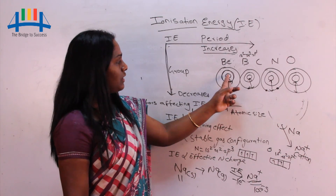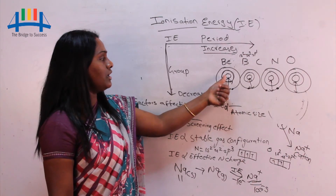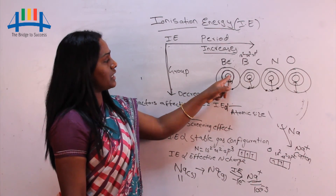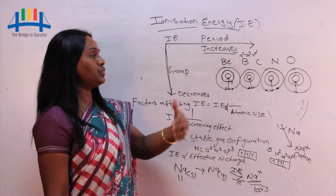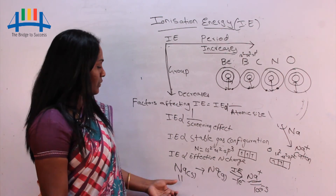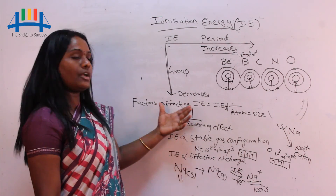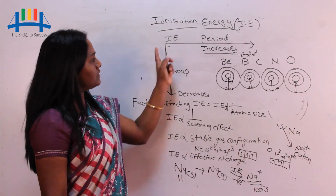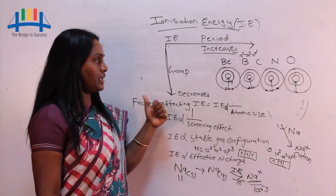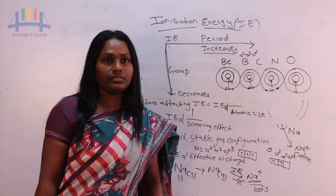Ionization energy is also directly proportional to effective nuclear charge: the more the number of protons, the more the proton's attraction toward the outermost electron, and thus the higher the ionization energy. These are the main factors that affect ionization energy, and this is the trend of ionization energy in the periodic table.